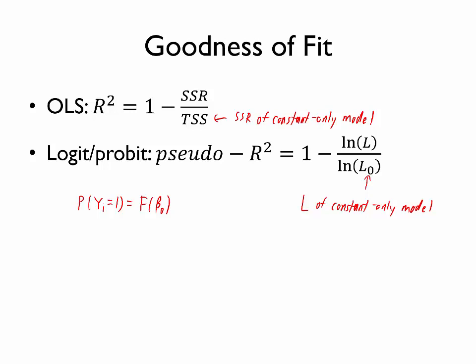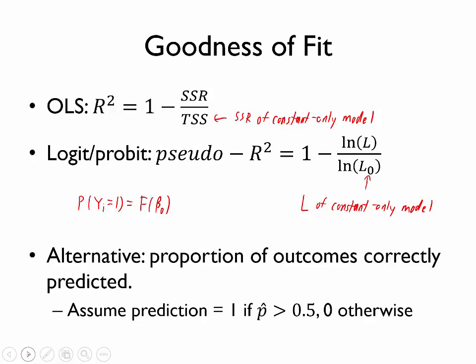In addition to measuring a pseudo-R-squared, we could measure an alternative that may be a little more intuitive, though it has some limitations. We could measure in a logit or probit model simply the proportion of outcomes correctly predicted. If we assume that a predicted probability greater than one-half indicates the predicted outcome is a 1, and 0 otherwise, we can ask how many of those binary predictions are correct. For example, estimating a logit model to predict the likelihood that an individual had a high school diploma based on their ASVAB score, we get a pseudo-R-squared of 0.30 and a proportion of outcomes correctly predicted of 0.91.